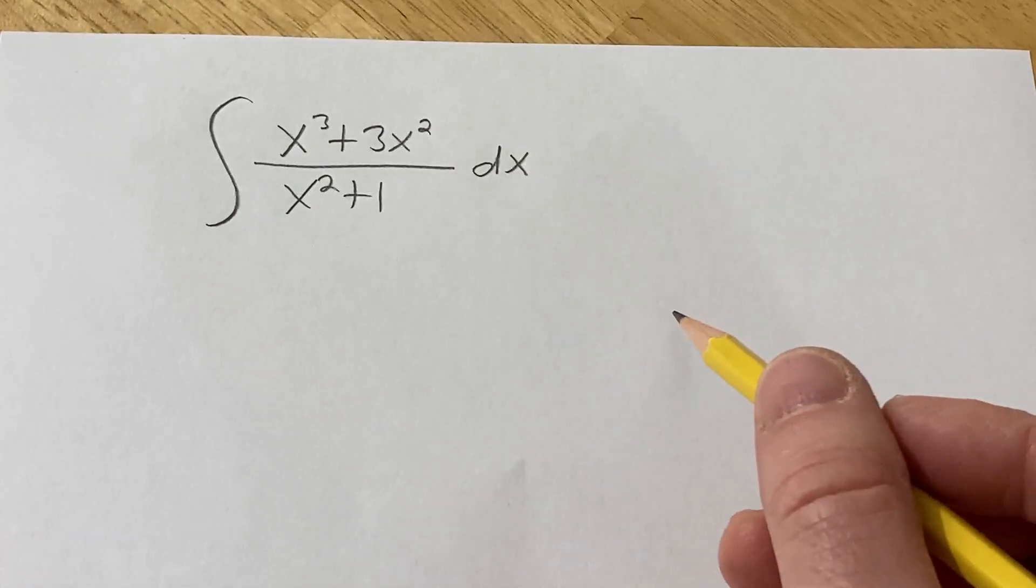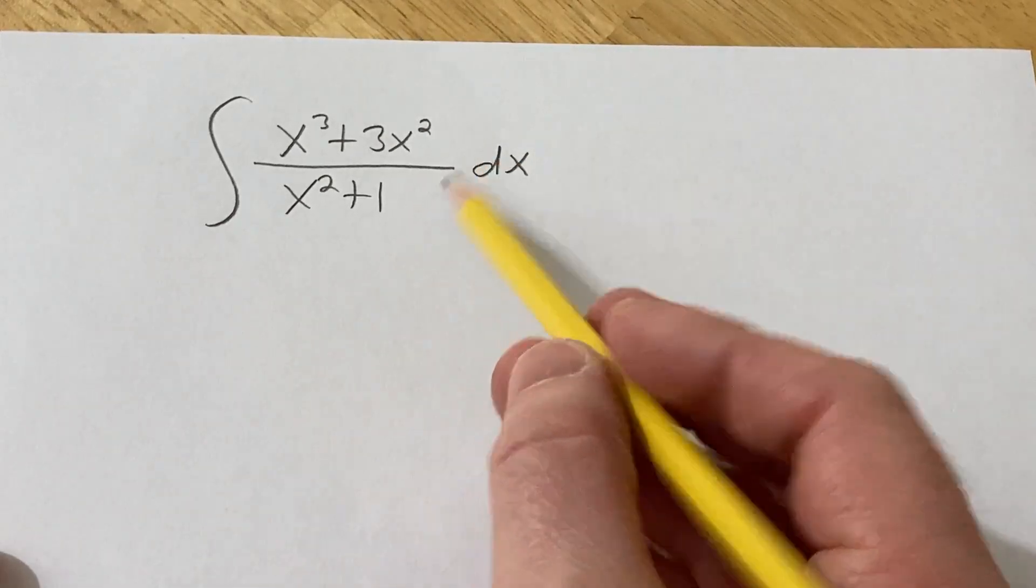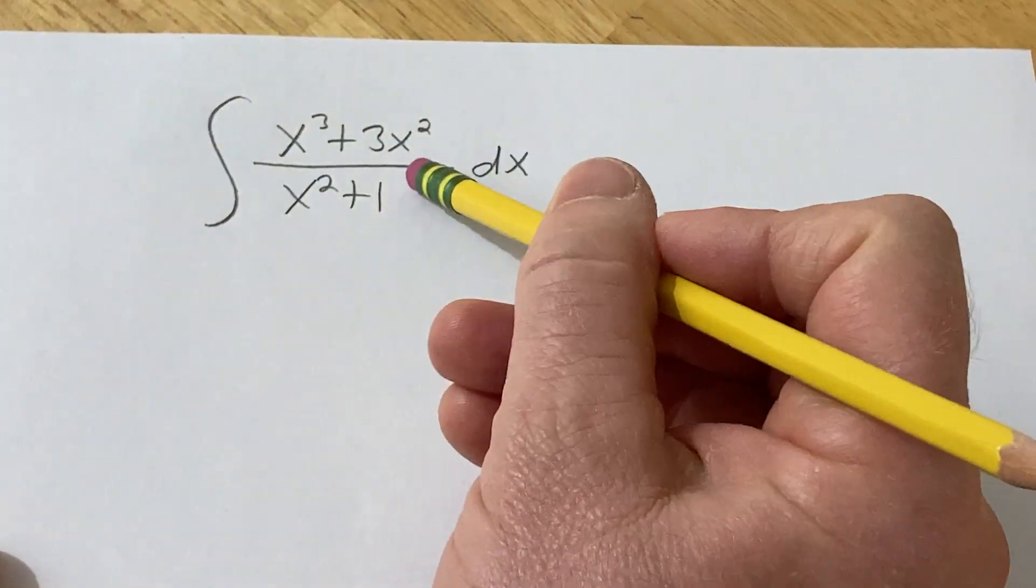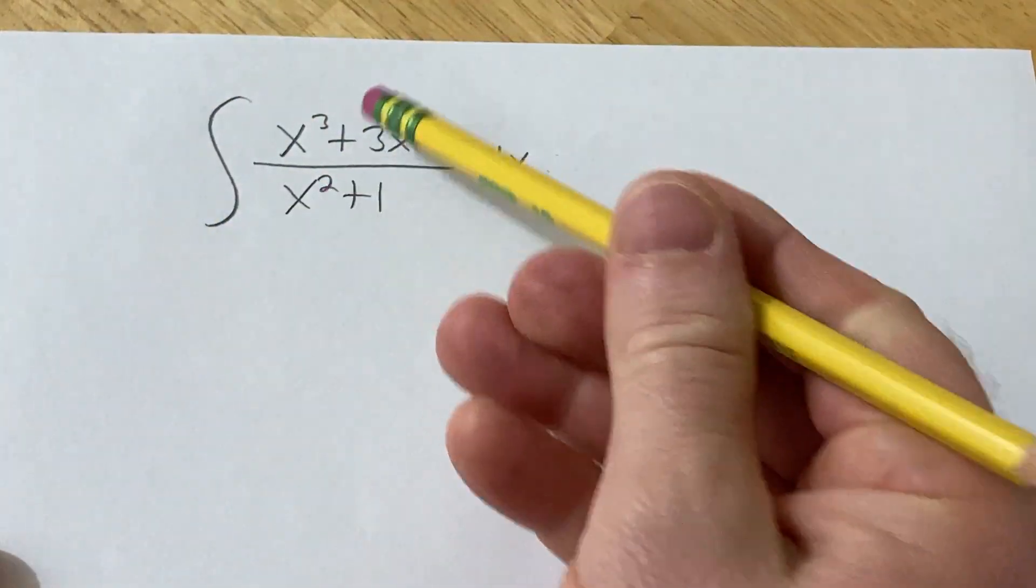Hello, in this problem we are going to evaluate this indefinite integral. So we have a rational function, because we have a polynomial over a polynomial.